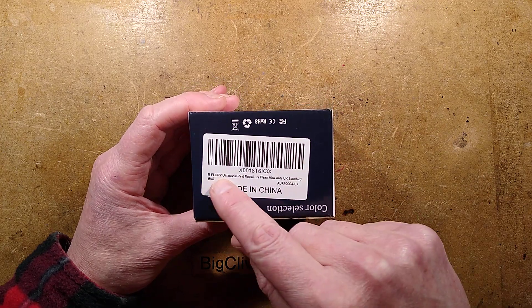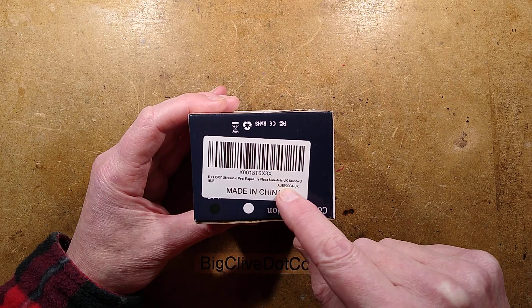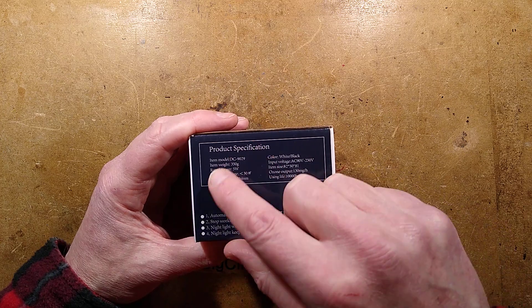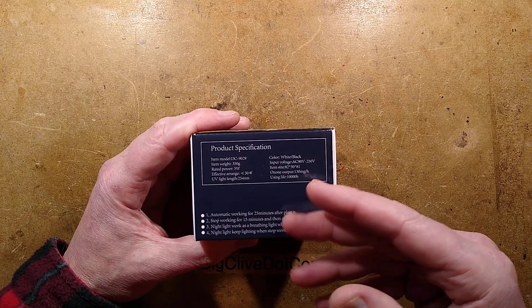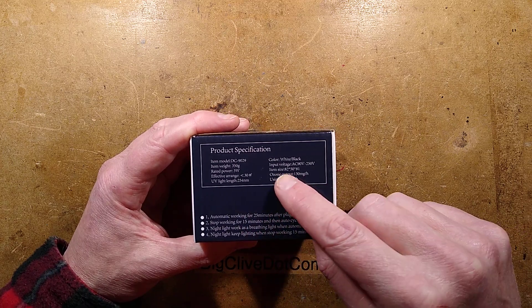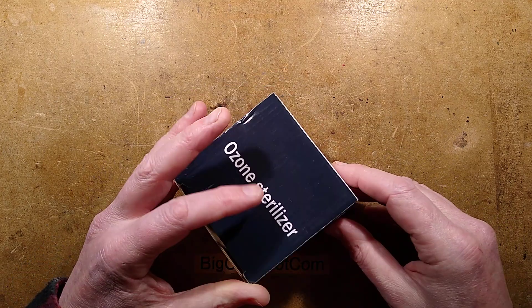Certainly no smell of ozone. And if you look at the small print on the side, it says RFlory ultrasonic pest repel fleas, mice, ants, UK standard. And yet on the other side, it says it's got all the text says UV light length 254 nanometre, which is a germicidal wavelength, but not an ozone generating one. Ozone output 130 milligrams an hour using life 10,000 hours. Very odd.